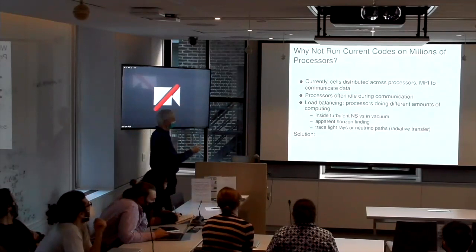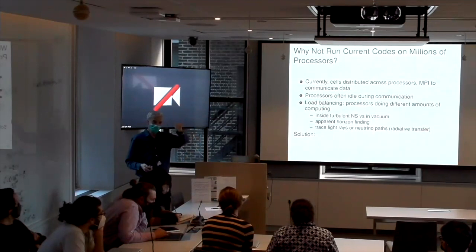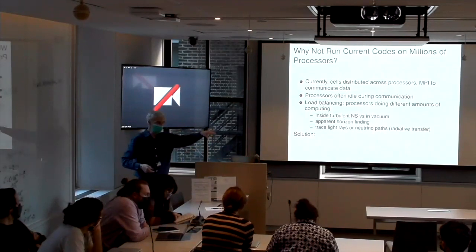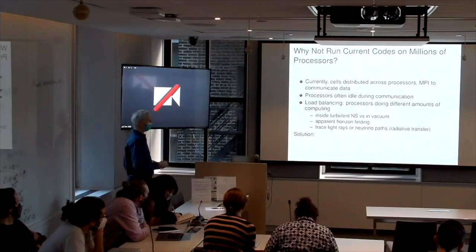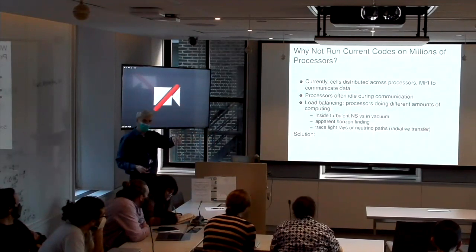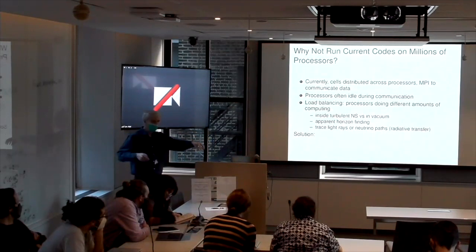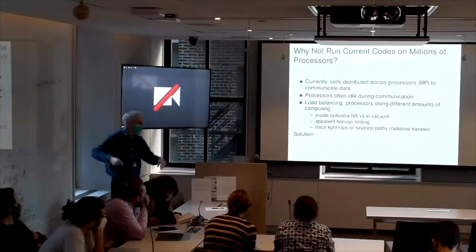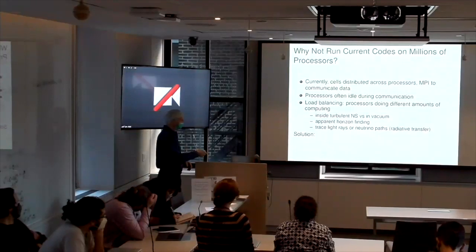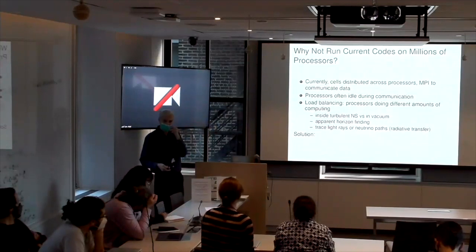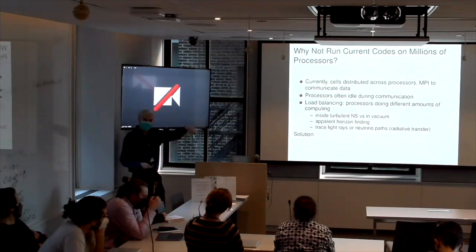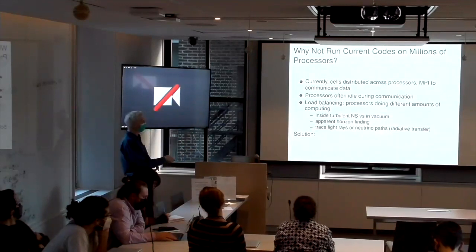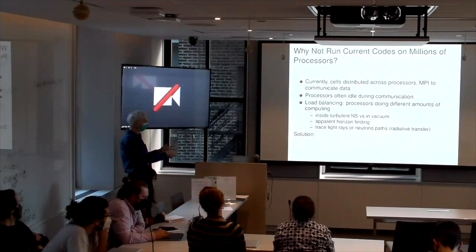And then you have a load balancing issue, which means that different processors can be doing different amounts of work. You might have adaptive mesh refinement, different number of grid points in different subdomains. You might be inside a turbulent neutron star on one subdomain, whereas you could be in vacuum propagating gravitational waves out to LIGO on another processor. So you might have to find where the location of the surface of the black hole is because you need to excise the singularity from your domain. So you're finding an apparent horizon. It might be tracing light rays to do radiative transfer or maybe neutrino pairs. Okay. So all of this different kinds of physics is going on.